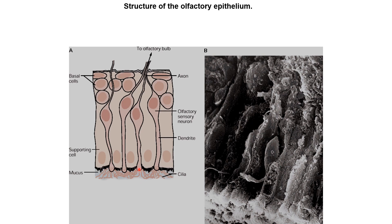When the odorants bind to the receptors, they indirectly result in the opening of ion channels, which changes the membrane potential inside the neurons and results in generation of action potentials carried by the axons to the olfactory bulb. Here is an actual image of the olfactory epithelium — the cells are very densely packed. We can see an olfactory sensory neuron, some basal cells, some supporting cells interspersed, and very fine hair-like cilia that increase the surface area for expressing the odorant receptors.